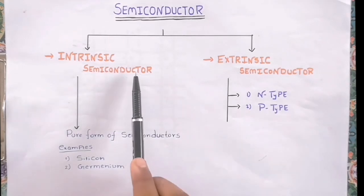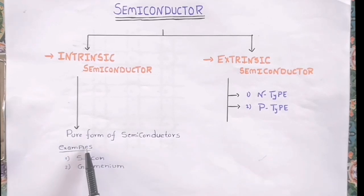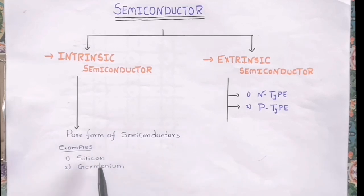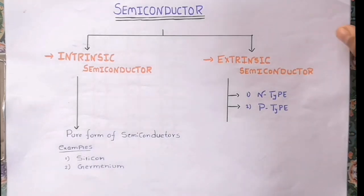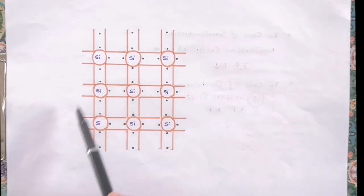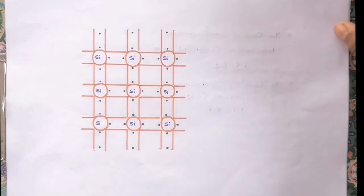Now let's see what is an intrinsic semiconductor. It is nothing but the pure form of semiconductors without having any impurities. Common examples for intrinsic semiconductors are silicon and germanium. Pure form means when there is no other atom present in a particular lattice — either silicon or germanium — and as you can see in this silicon lattice, there is no other atom present except silicon.